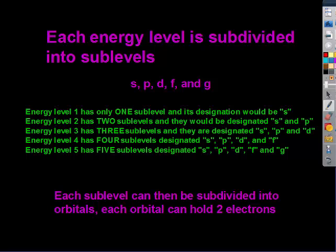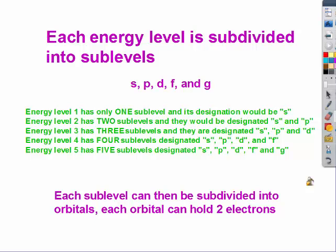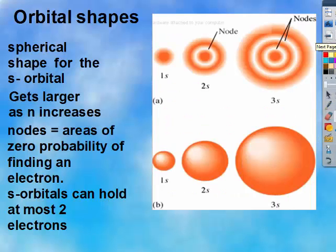Each sub-level can then be subdivided into orbitals. Each orbital can hold two electrons. Each sub-level has a different shape. The S sub-level is spherical in shape. And as N increases, remember that N is the energy level. As the energy level increases, the atom gets larger.